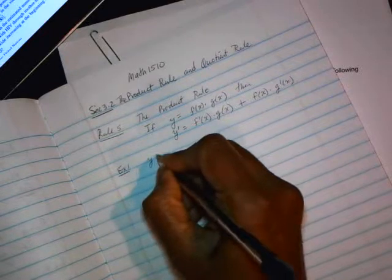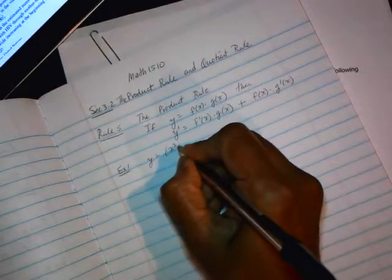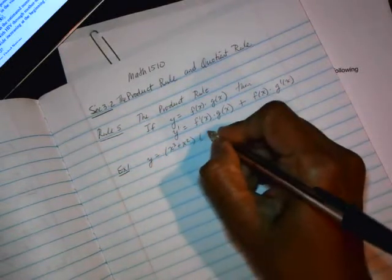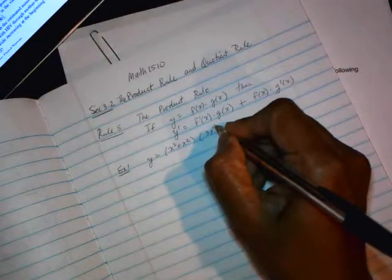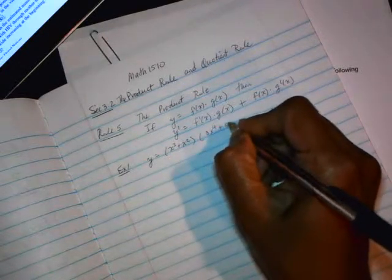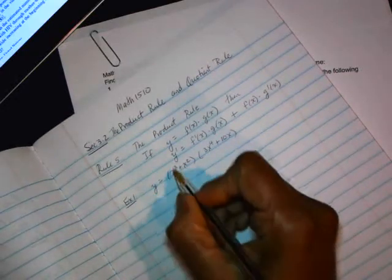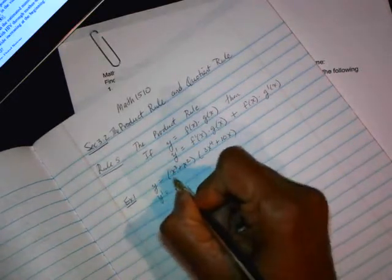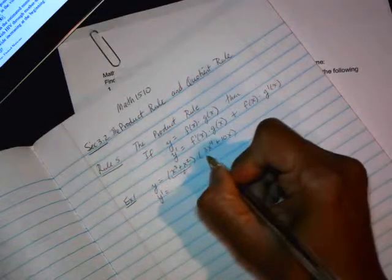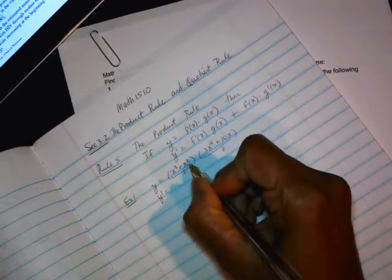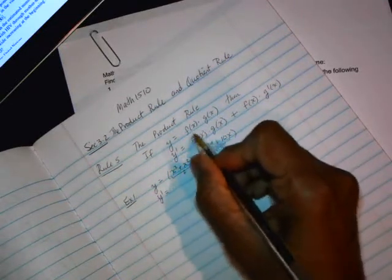Example 1, let's say y is equal to x cubed plus x squared times 3x to the 4th plus 10x. Now, if we were to use the product rule, we would have to call this f, we call this g. Take the derivative of the first, f prime,